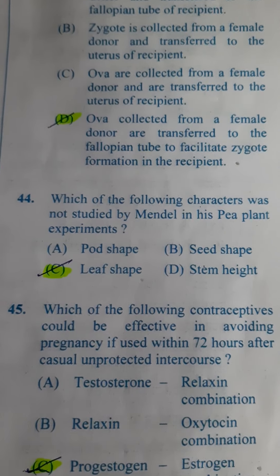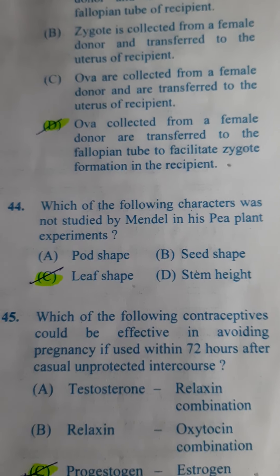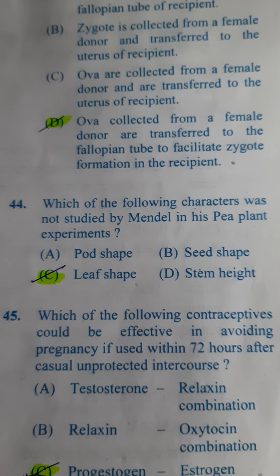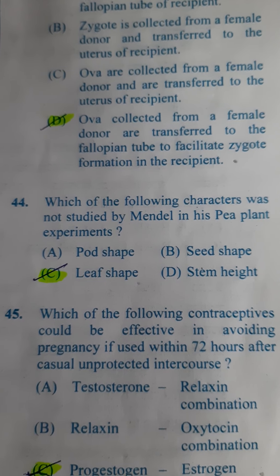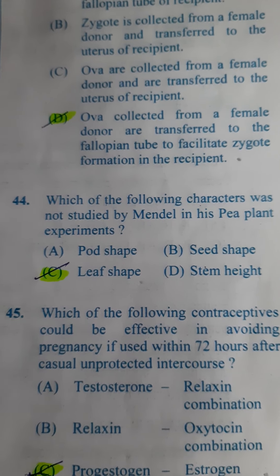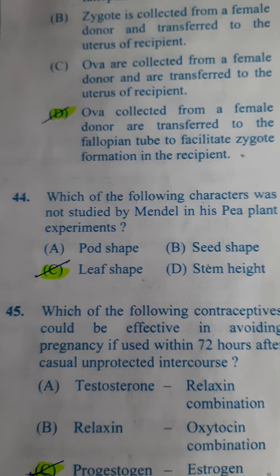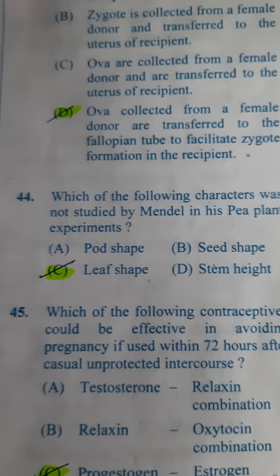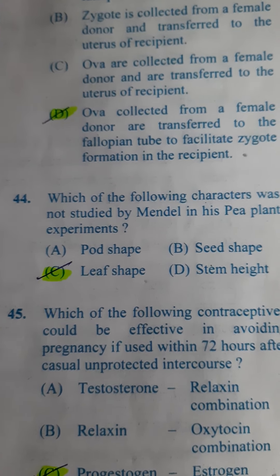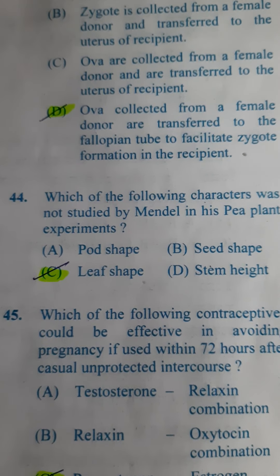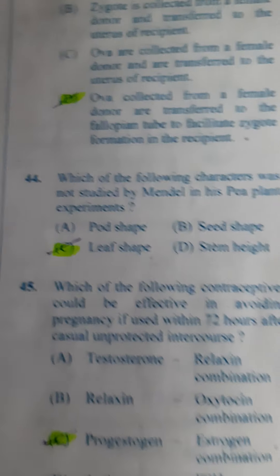Next question: Which one of the following characters was not studied by Mendel in his pea plant experiment? Options are pod shape, seed shape, leaf shape, and stem height. We have learned the other three but leaf shape was not included by Mendel. So the answer is C.